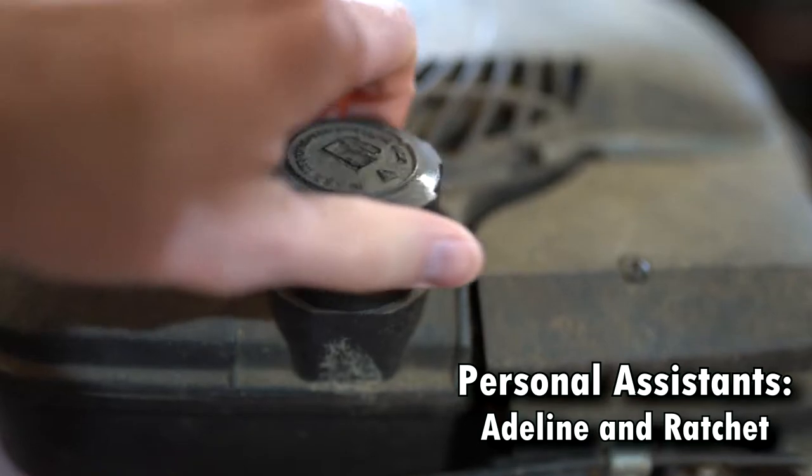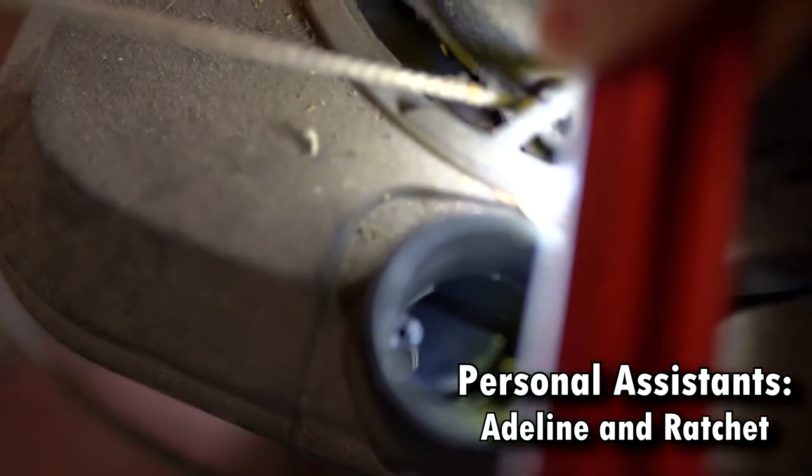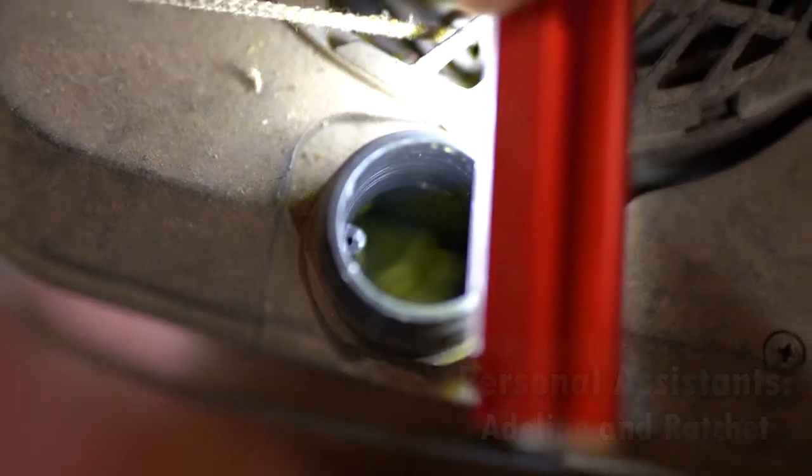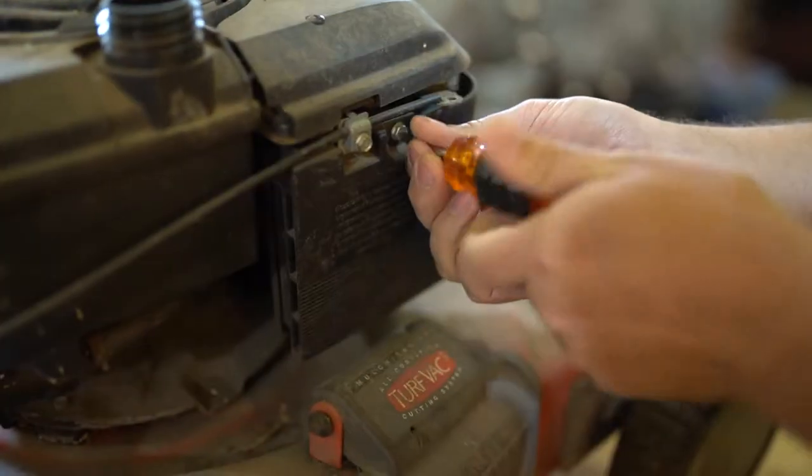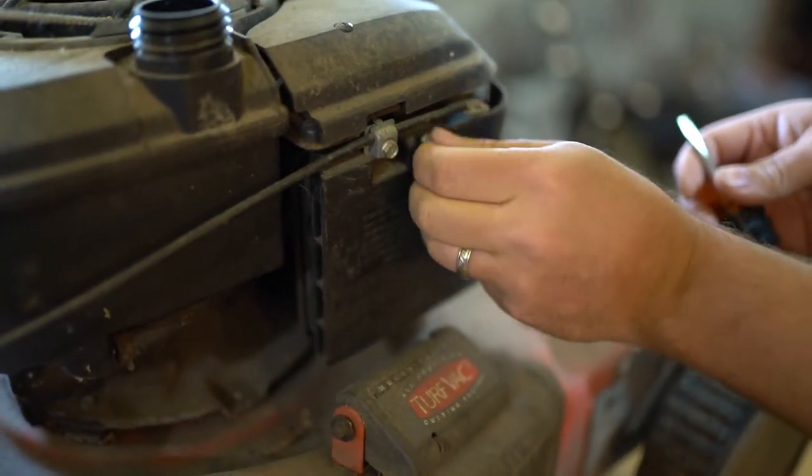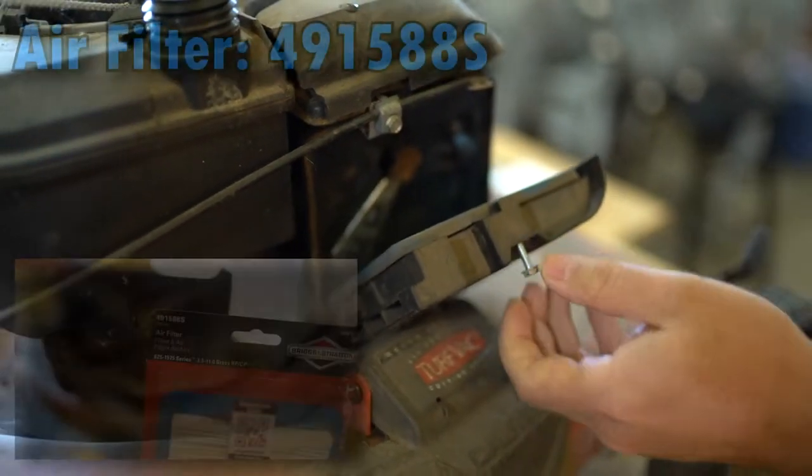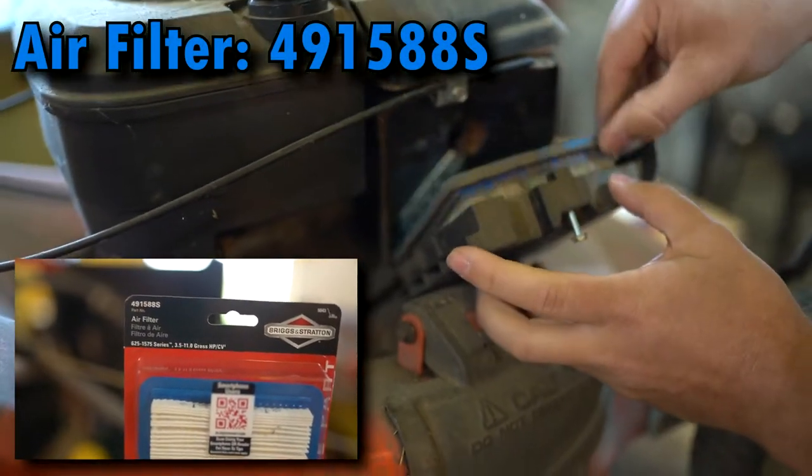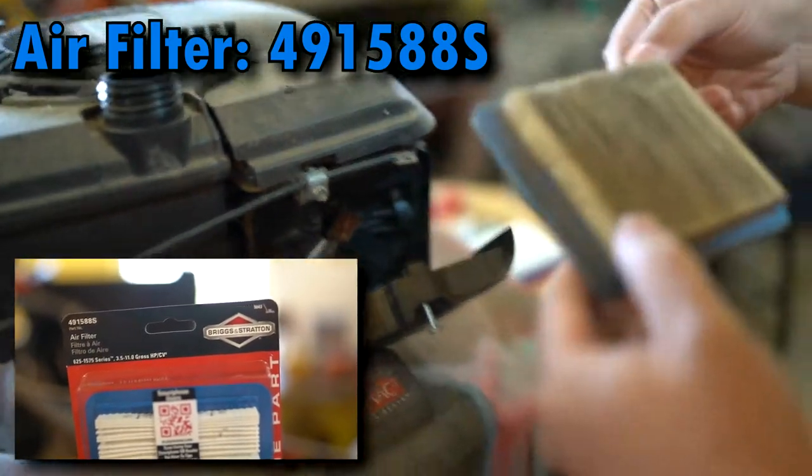In some of our previous videos inactive mowers have contained old fuel but luckily the machine's gasoline was drained prior to being decommissioned. Let's start by using a flathead screwdriver to remove the air intake. We'll be replacing the beat-up filter with a new 491588S.